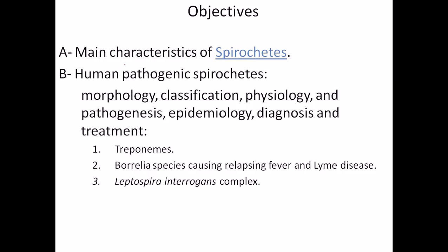In this discussion, we will first talk about the main characteristics of spirochetes, the different types of spirochetes and their general cell features. Then we will discuss the human pathogenic spirochetes — their morphology, classification, and physiology, up to epidemiology. There are three types of spirochetes: Treponema, which causes syphilis; Borrelia species, which cause relapsing fever and Lyme disease; and Leptospira, which causes different sets of diseases we will see later.